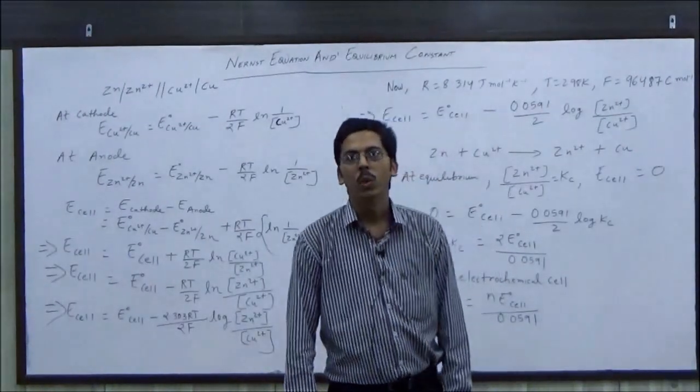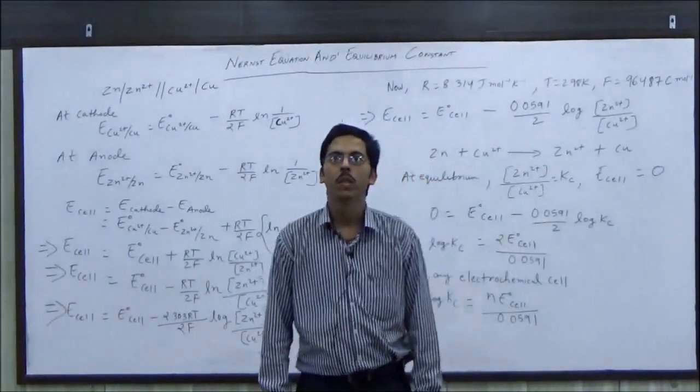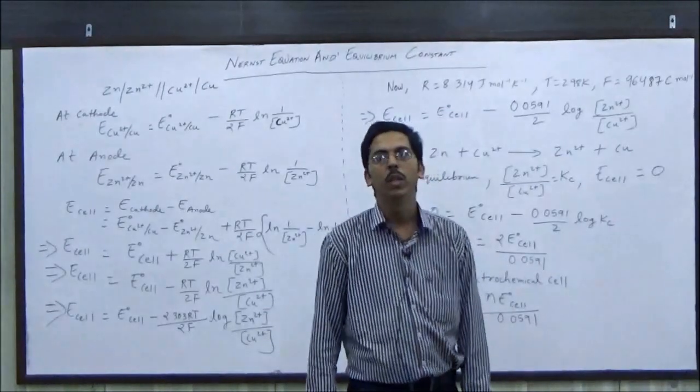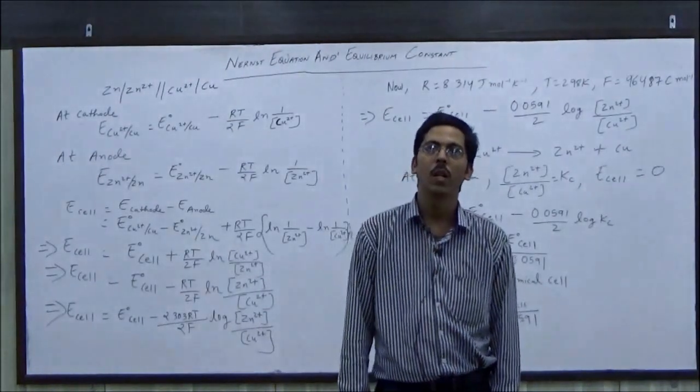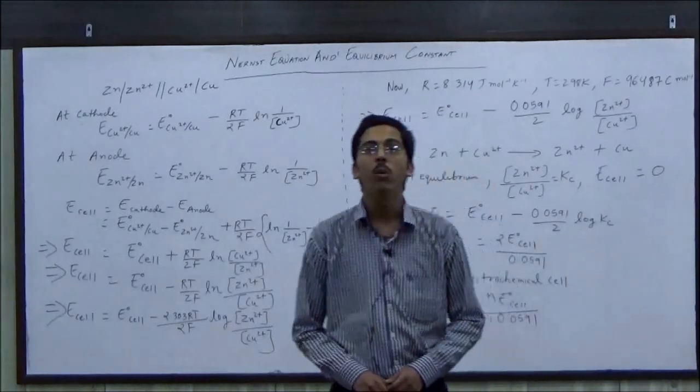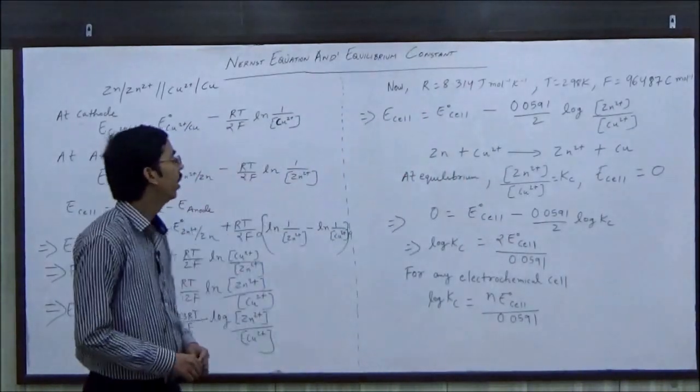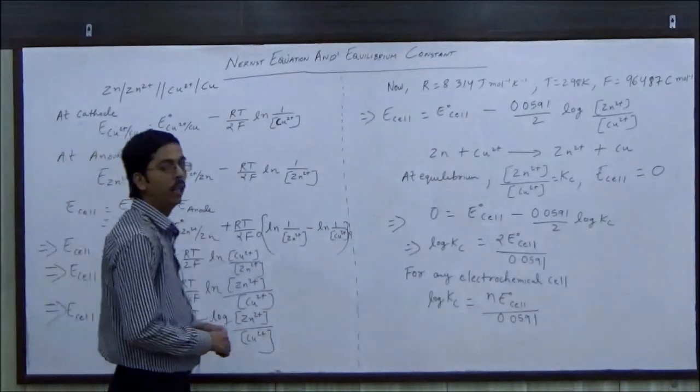Hello all of you. Today we are going to study Nernst equation and relationship between equilibrium constant and standard electrode potential of an electrochemical cell. Now to study Nernst equation, we have considered a Daniel cell.